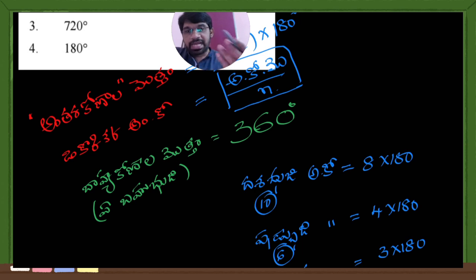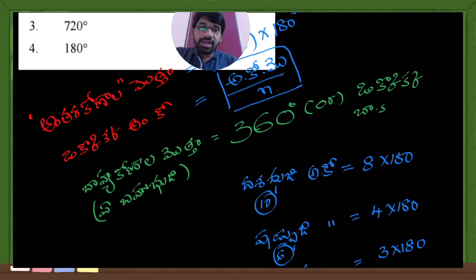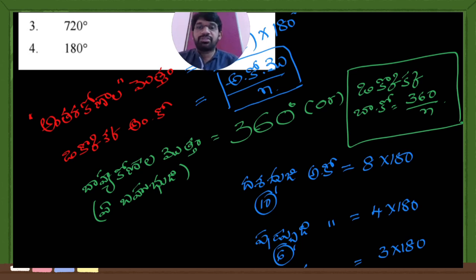360 degrees. The Bahya Konam (exterior angle) sum is 360 degrees. This is 360 degrees. And the next point is Aahi Konam. Aahi Konam — 360 divided by Bojala Sankhya (number of sides). This is Bahya Konam: 360 by N, where N is Bojala Sankhya.